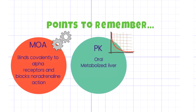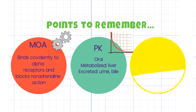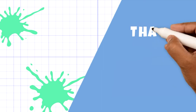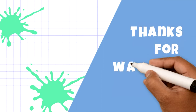The pharmacokinetics of the drug include that it is given via oral route, it is metabolized in the liver, and it is excreted via urine and bile. The adverse effects mainly include postural hypotension and tachycardia.